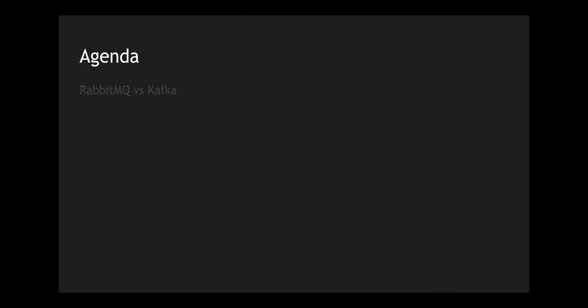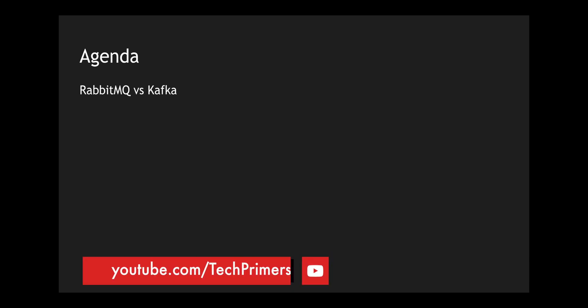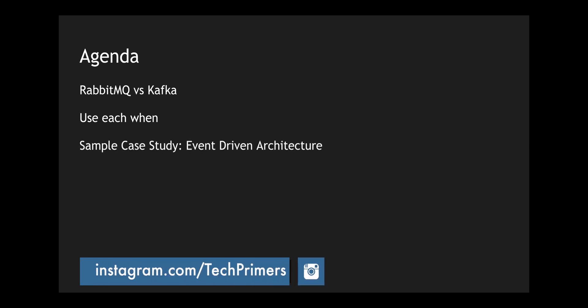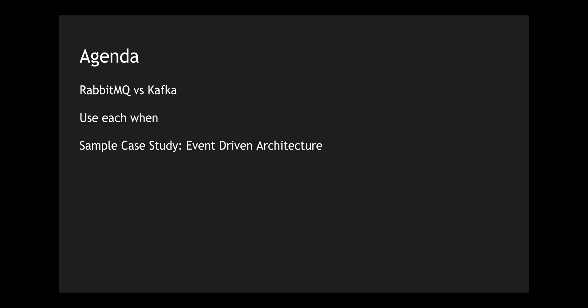The agenda goes like this: initially we will be looking at the features of RabbitMQ and comparing it with the features of Kafka. Then we will look at when to use each of these platforms. I'll overlay this whole RabbitMQ versus Kafka comparison with a simple case study, looking at an architecture diagram with RabbitMQ and Kafka implementations in a microservices-based architecture. Finally, we will look at the limitations and challenges between these two platforms.